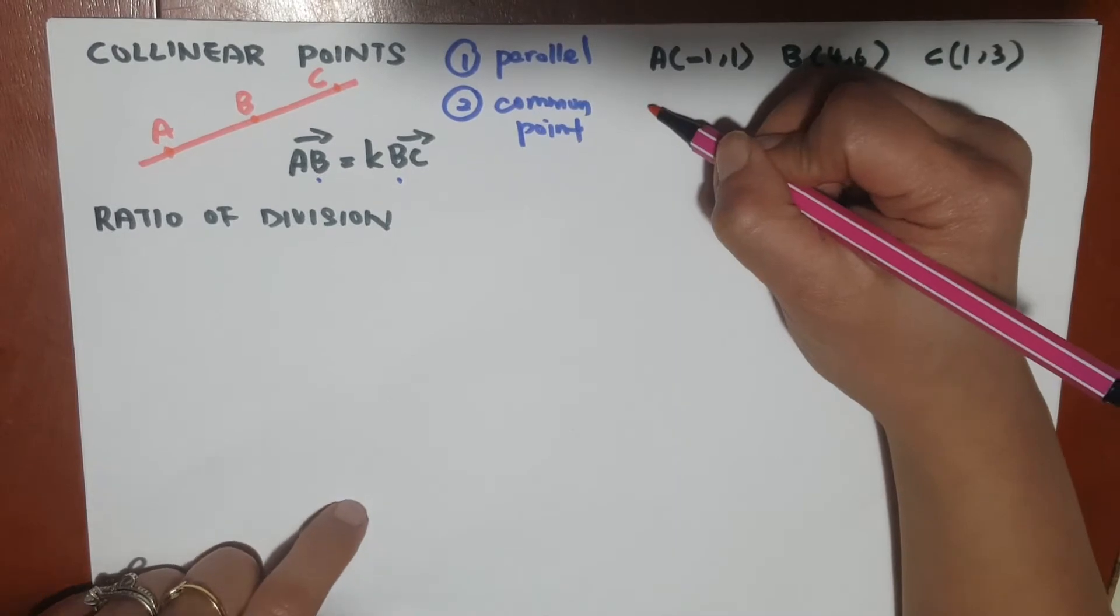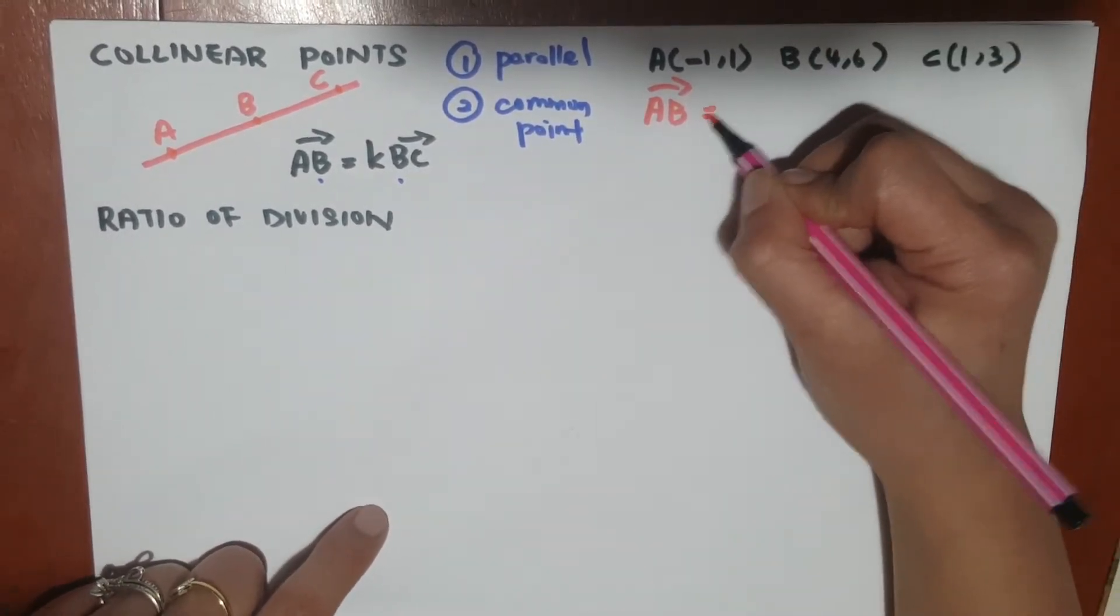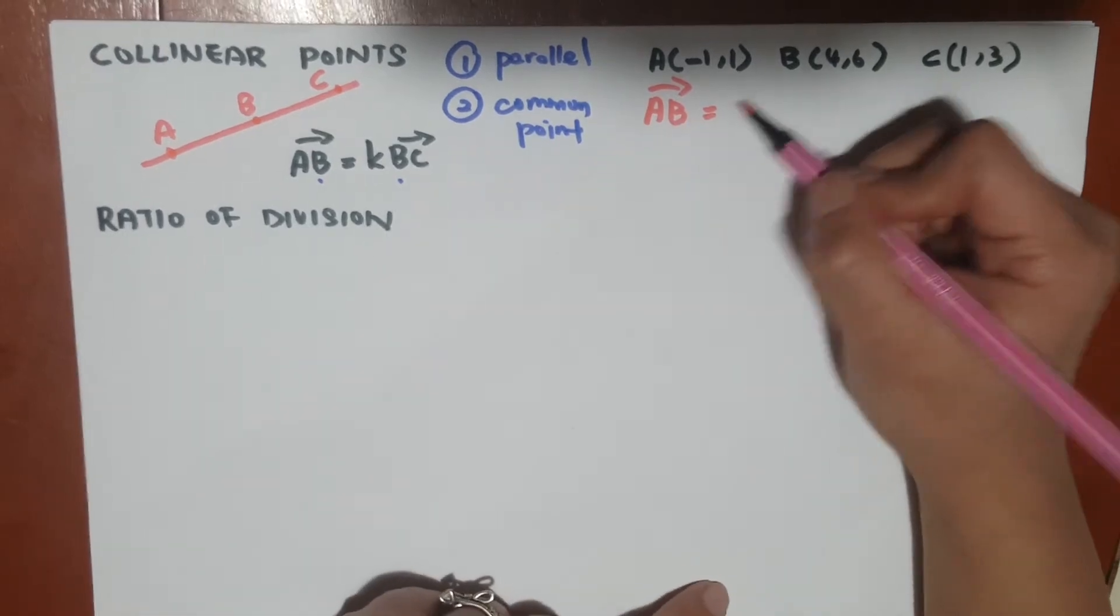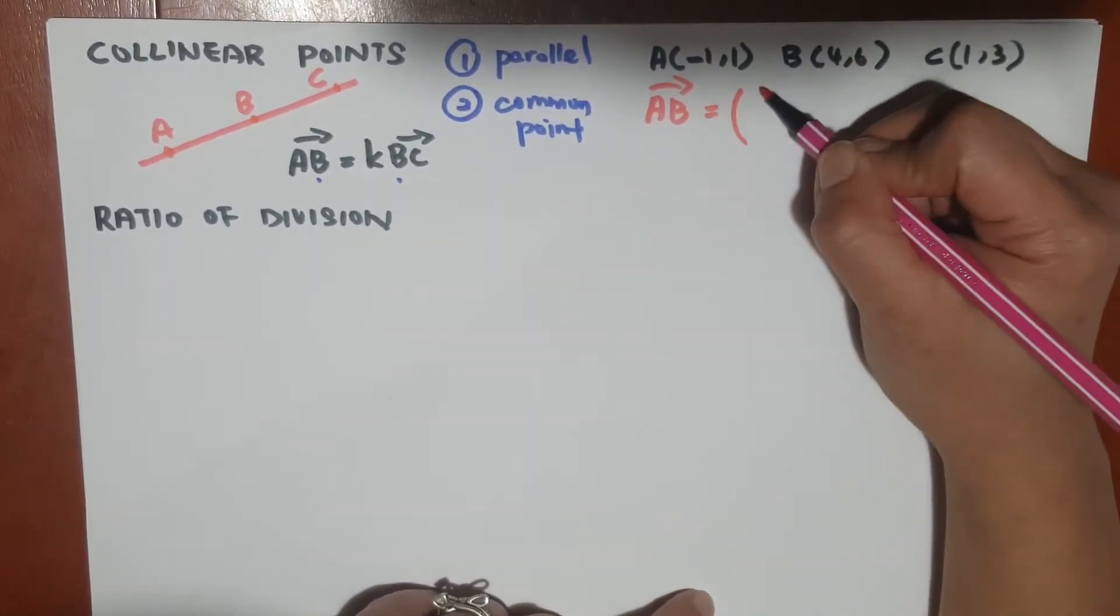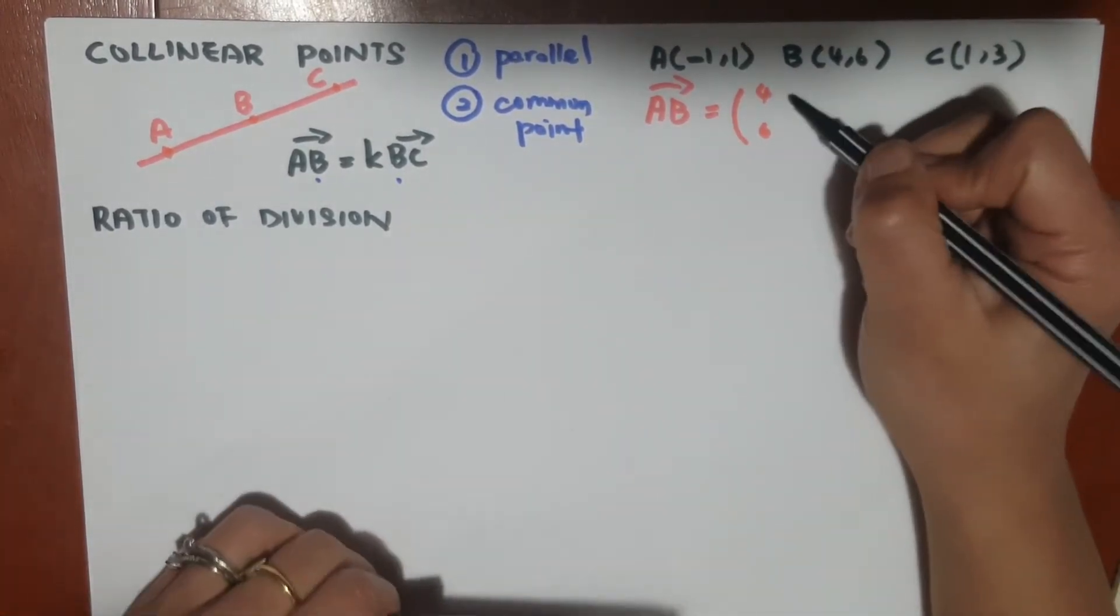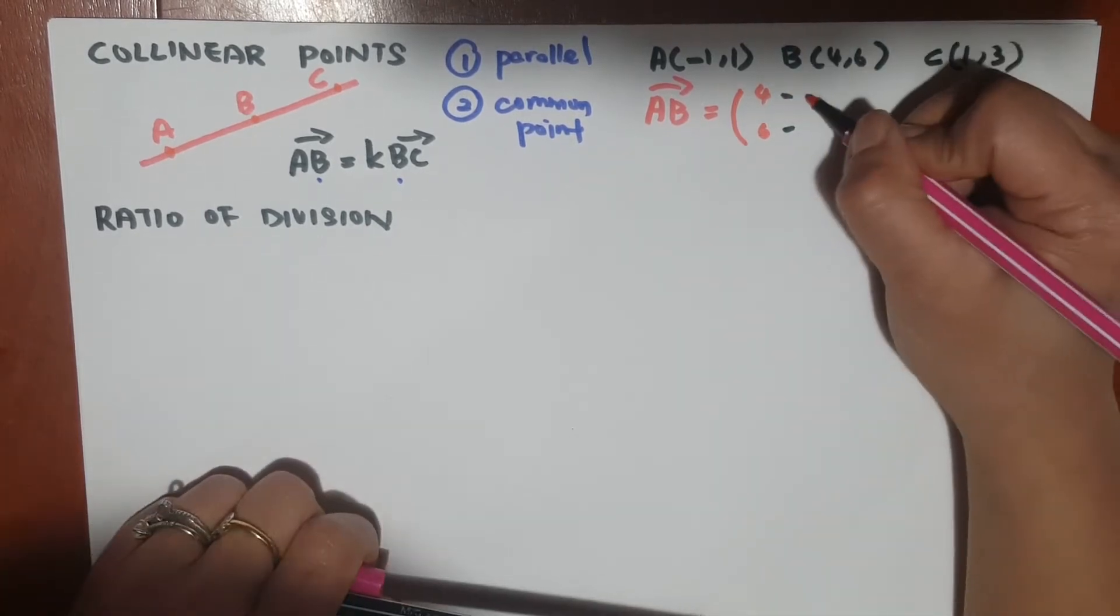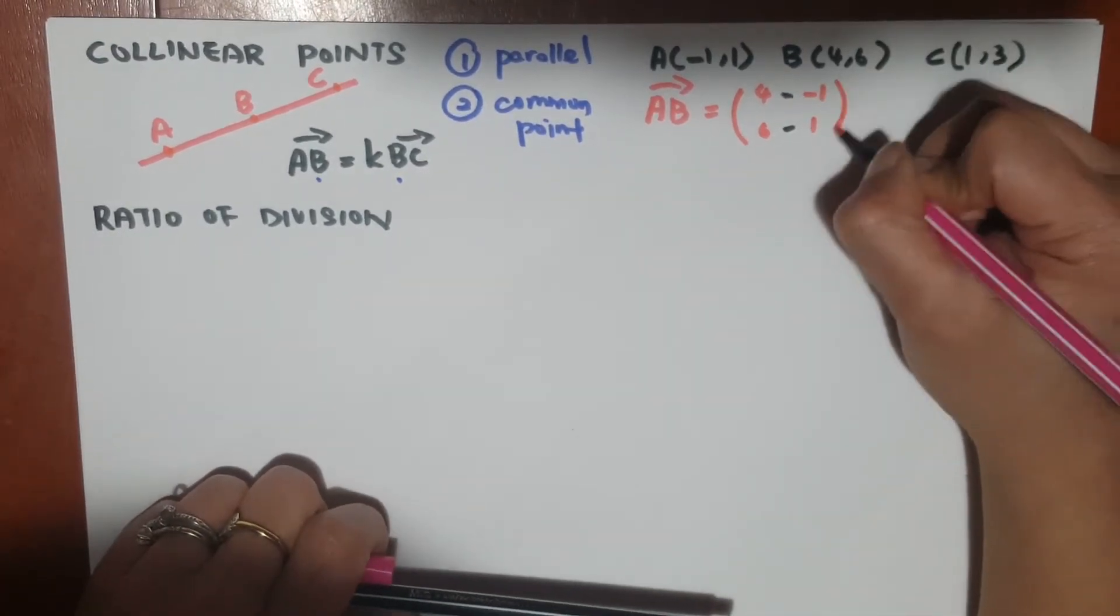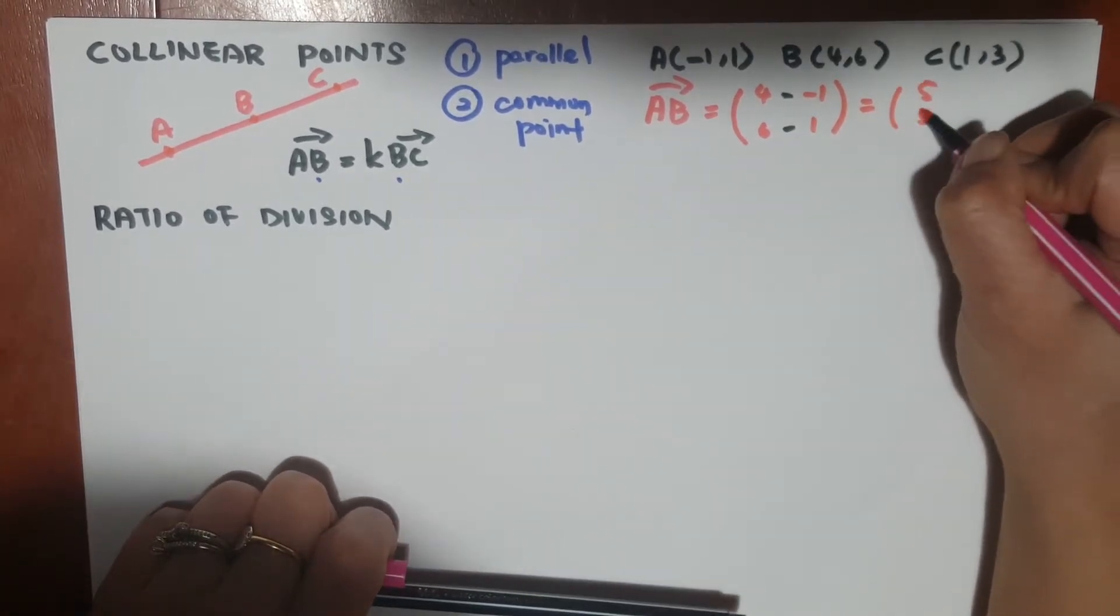How do we find that they are collinear? We can develop two vectors. For example, the first vector could be vector AB. Vector AB is B first, which is (4, 6), minus A, which is (-1, 1). So vector AB is actually (5, 5).